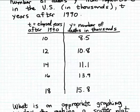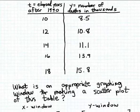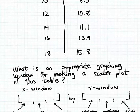In this problem, the question we want to answer is: what would be an appropriate graphing window if we're going to make a scatter plot of the data in this table?